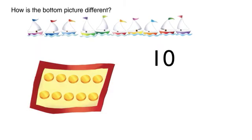How is the bottom picture different? It shows ten with counters instead of boats.